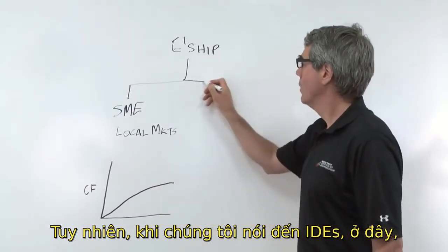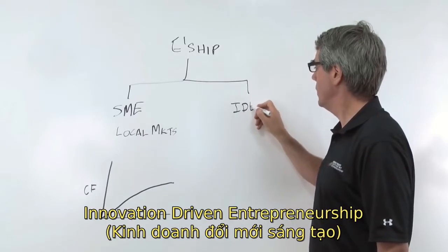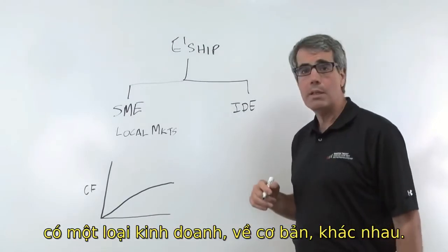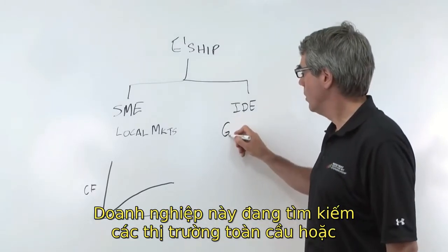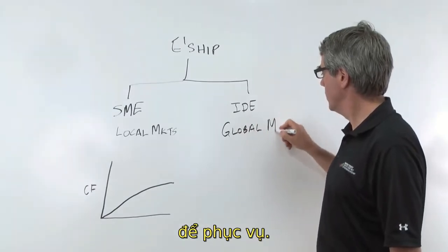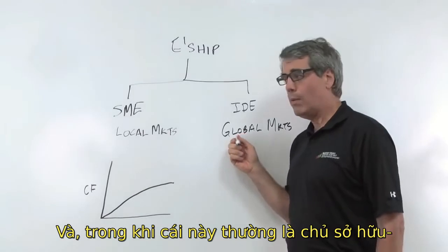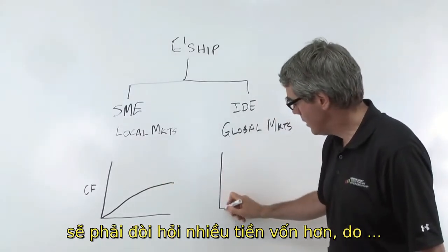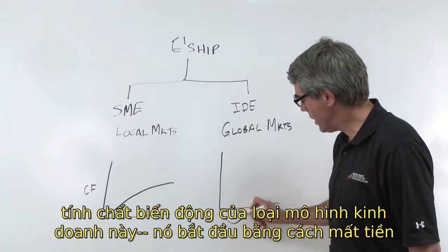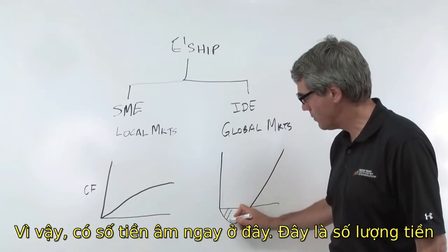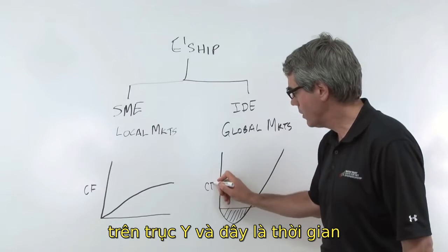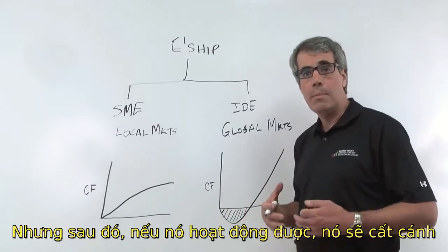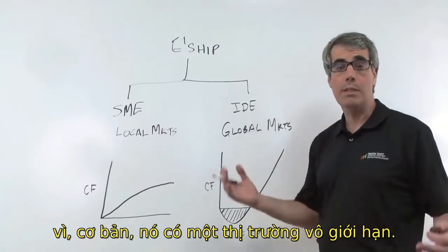When we go to IBEs over here — which I will call innovation driven enterprise entrepreneurship — we have a fundamentally different business. This one is looking for global markets or super regional markets to serve. While the SME is usually owner-controlled, the IBE is going to require more cash because it initially loses money, and then it's going to start showing exponential growth. So there's this negative cash flow initially. If this is cash flow on the y-axis and time along the x-axis, it'll initially require capital, but then if it works, it will take off because it's got basically unlimited markets.